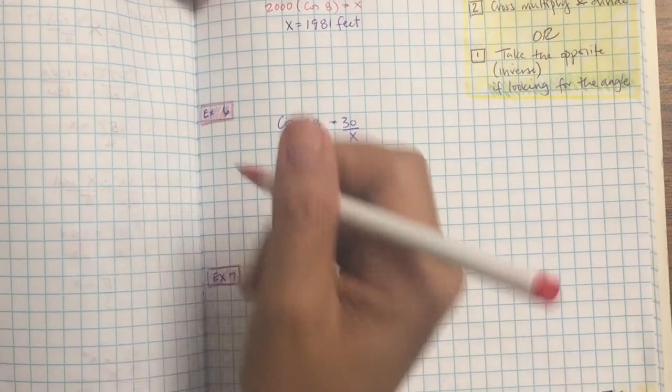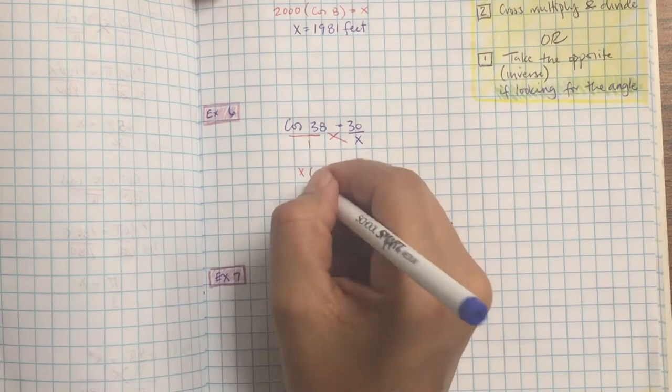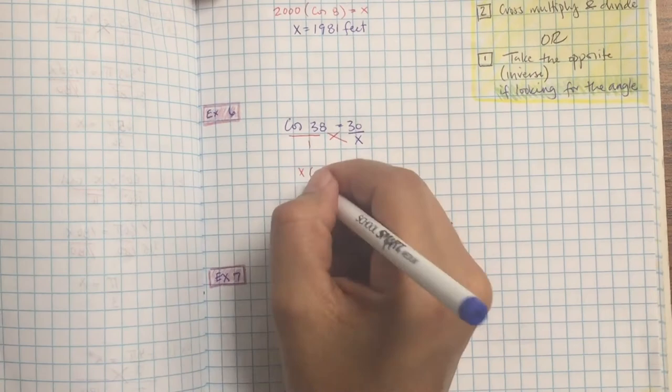Last one. Cosine of 38 equals 30 over x. Put a 1 underneath, cross multiply and divide. So you're going to get x cosine 38 equals 30. And then divide both sides by cosine 38 to get x by itself. And then put in the calculator. 30 divided by cosine of 38. And this one is to the nearest meter. So there should be no numbers. That zero is going to keep it the same. So 38. That's it. Let's practice.